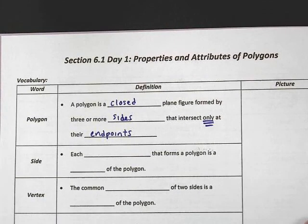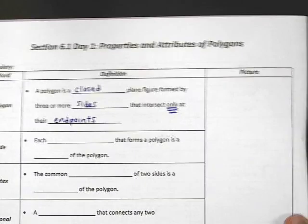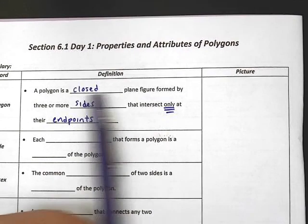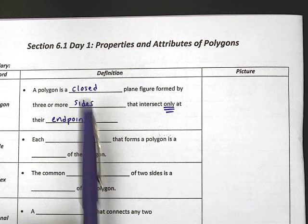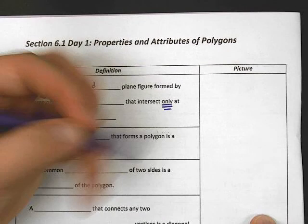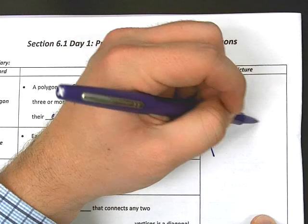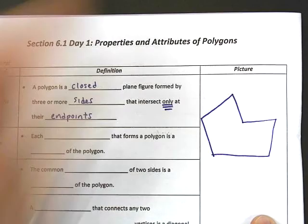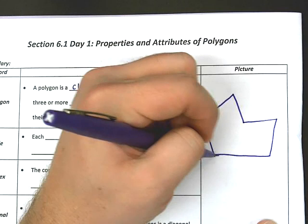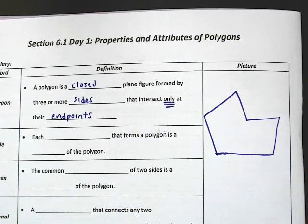Let's draw a polygon. We need to basically just draw a closed plane figure formed by three or more sides. So, how about something like this? Alright, this is a polygon. Now let's talk a little bit about it.